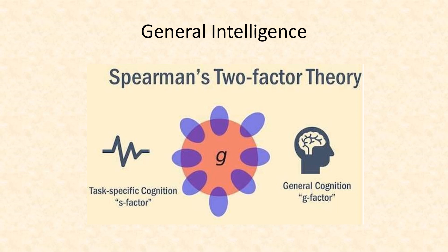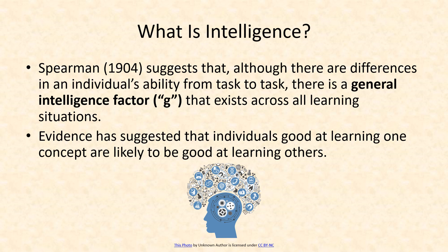Let's begin with the research of Spearman. In the early 1900s, Spearman divided intelligence into two different factors. He said there's an S factor, which is task-specific cognition, and there's something he called a G factor, which is general cognition. Spearman is suggesting that sometimes a person is better at one task than another, and different people are better at different tasks — that's how they differ from each other. While there's task-specific intelligence, there's also a general intelligence factor, or the G factor, that exists across all learning situations.